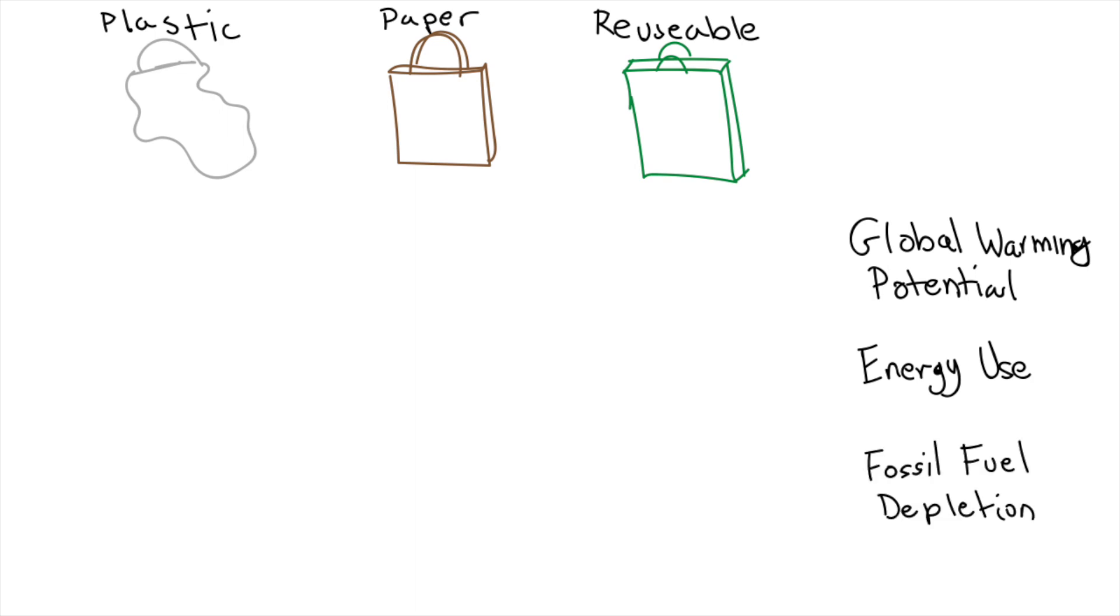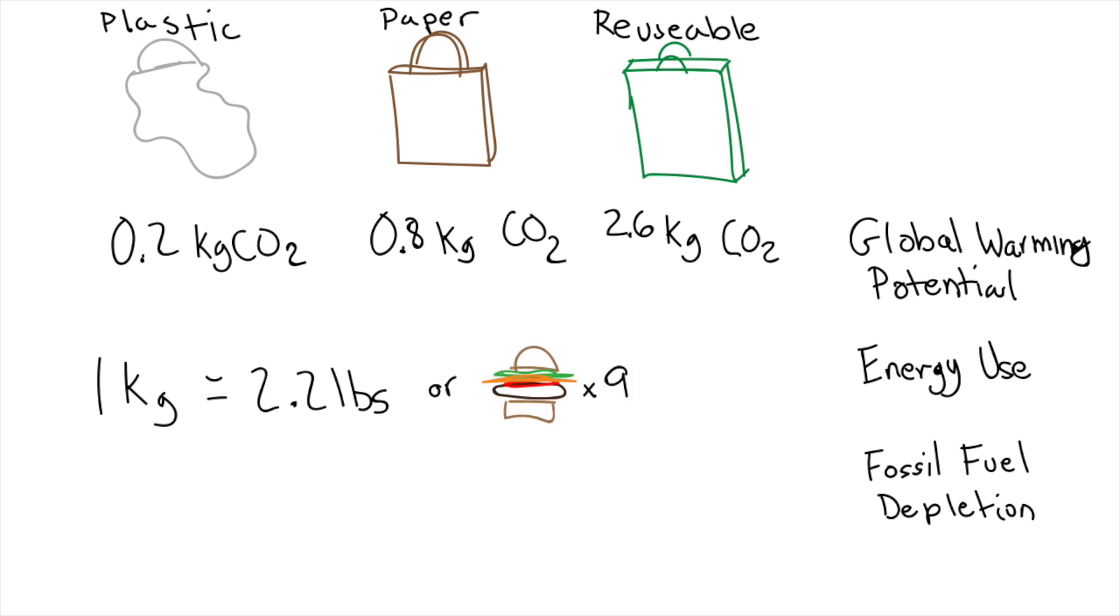A single plastic bag costs about 0.2 kilograms of CO2 to produce. Your paper bag is about 0.8 kilograms of CO2, and your reusable bag is about 2.6 kilograms. For all us Americans watching this, one kilogram is about 2.2 pounds, or about nine quarter pounders with cheese without the cheese, bun, or anything on it.